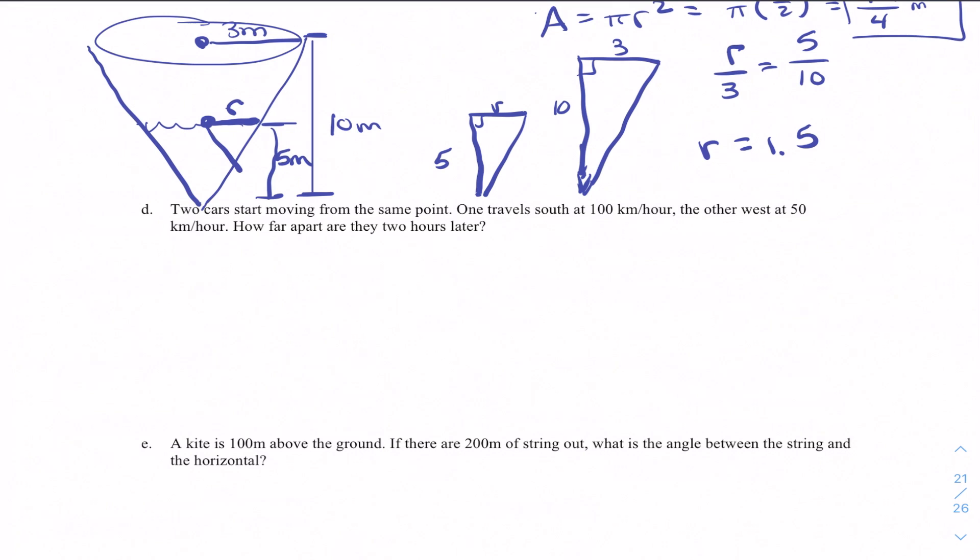Other types of interesting problems you will see. Let's say two cars start moving from the same point. One travels south, going 100 kilometers per hour. So let's say south equals 100 kilometers per hour. And the other, west, let's make sure I have that in the right direction, west equals 50 kilometers per hour.